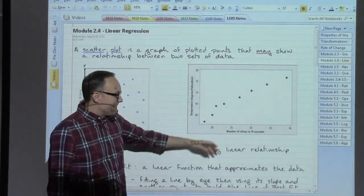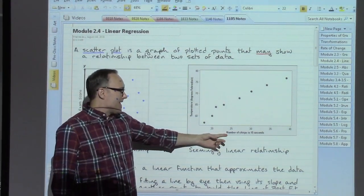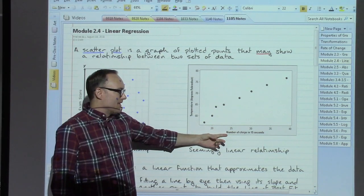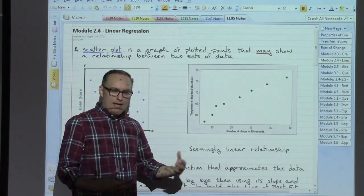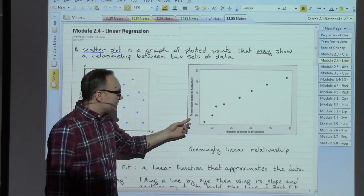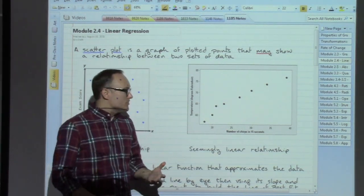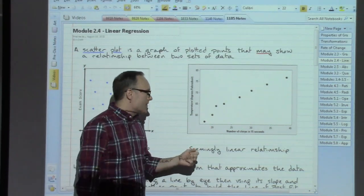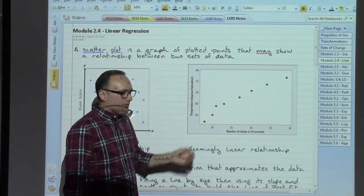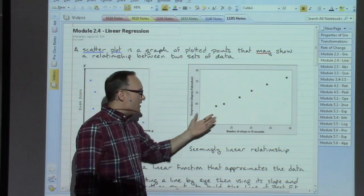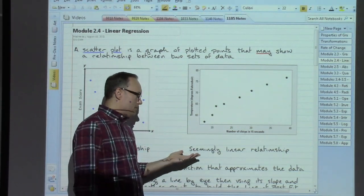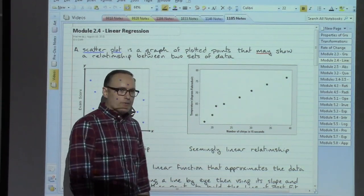However, if we are talking about, say, the number of chirps in 15 seconds that a cricket emits versus the temperature, maybe there's a relationship there. Counting the number of chirps depending on the kind of temperature we've got going on, well yeah, that does have a seemingly linear relationship.